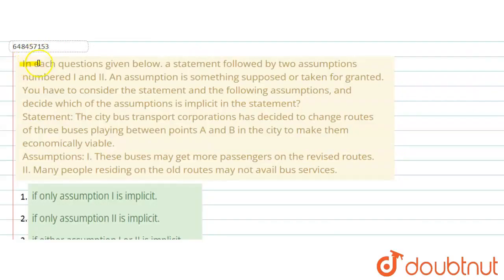The question says, in each question given below, a statement followed by two assumptions, number one and two. An assumption is something supposed or taken for granted. You have to consider the statement and following assumptions and decide which of the assumption is implicit in the statement.